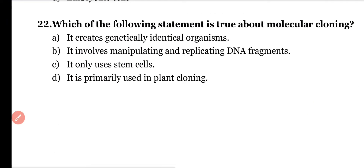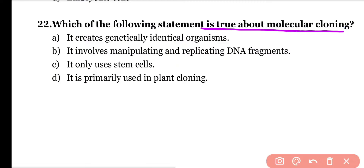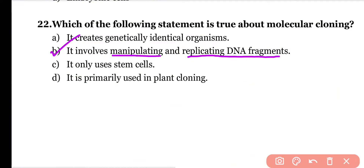Question number twenty-two: Which of the following statements is true about molecular cloning? It creates genetically identical organisms; it involves manipulating and replicating DNA fragments; it only uses stem cells; or it is primarily used in plant cloning. Correct answer is option B. Through molecular cloning, DNA fragments can be replicated and manipulated.